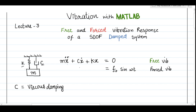When we have damping in our system, the damping force is defined by the damping constant multiplied by the velocity of the mass. When the mass vibrates, we can write displacement, velocity, and acceleration as x, x dot, and x double dot. The viscous force is proportional to velocity, whereas the spring force is proportional to displacement.